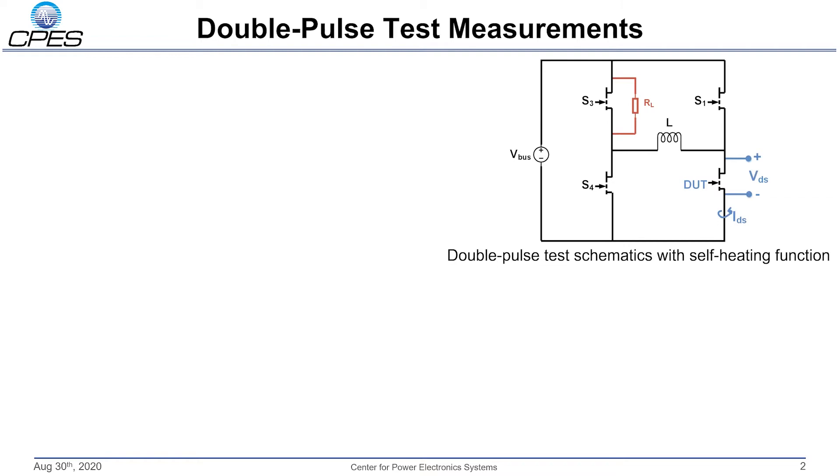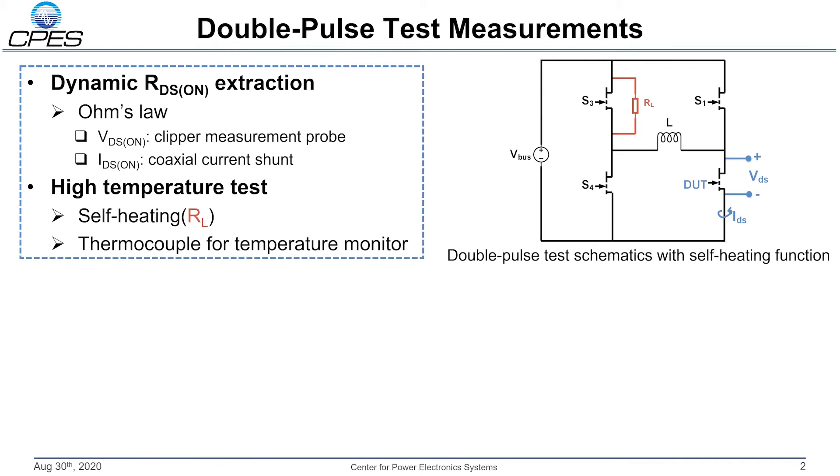For double-pulse test measurements, the test schematic is shown in the top right figure. Dynamic RDS(ON) value is calculated using Ohm's law. On-state voltage is measured by a voltage clipper probe, and current is measured by a coaxial current shunt. During the test, a resistor RL is paralleled as the figure shows, which is used for device self-heating, seeking to characterize dynamic and static RDS(ON) at the same condition.